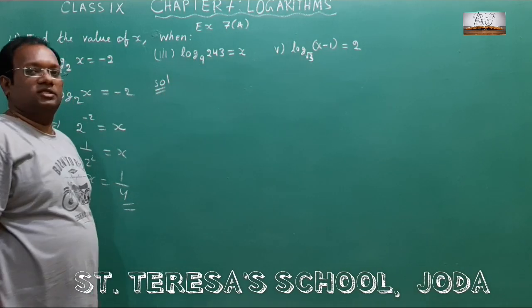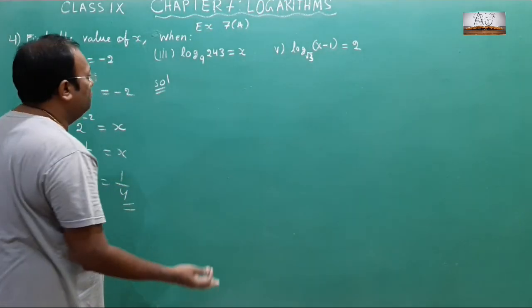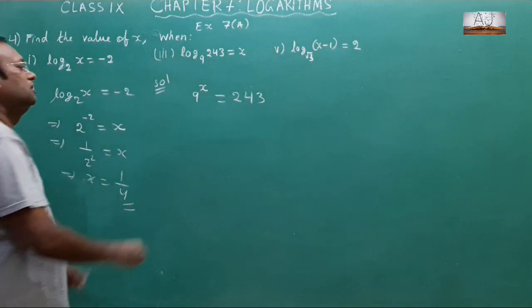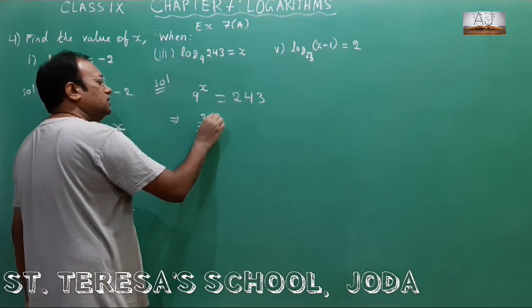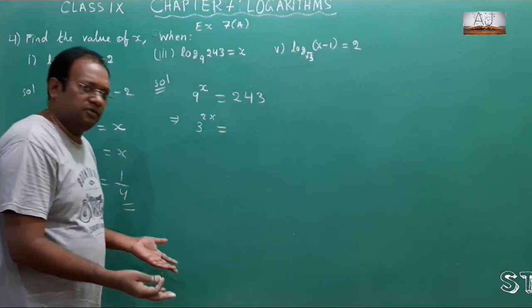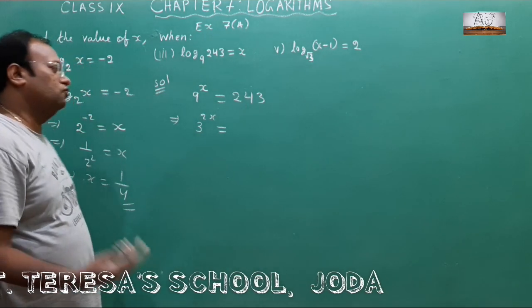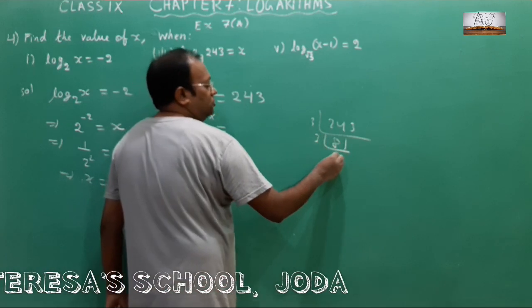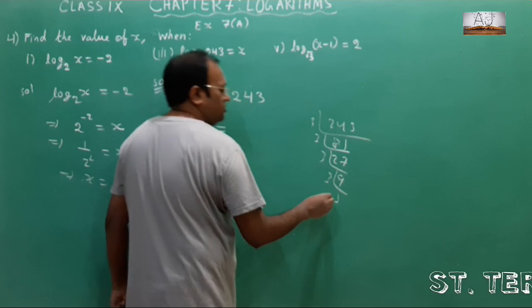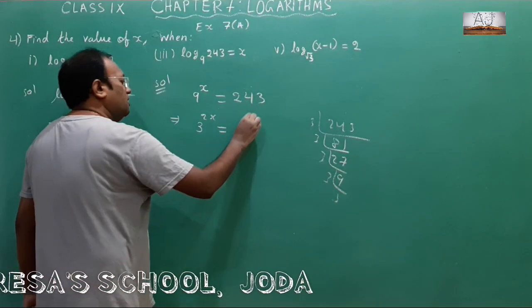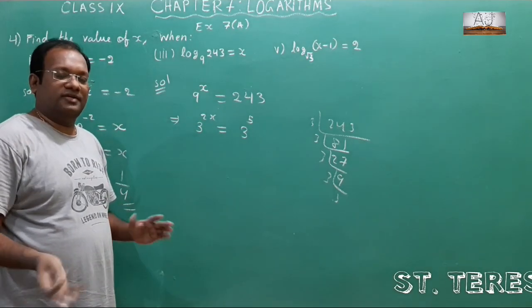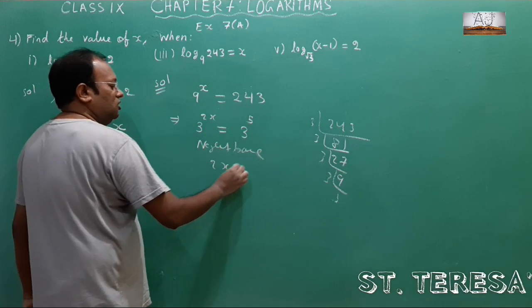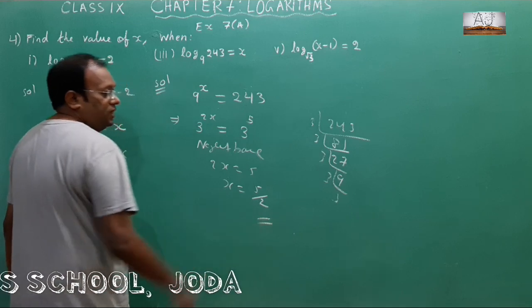Second bit: log 243 with base 9 equals x. Convert to exponential form: 9 to the power x equals 243. Now 9 is 3 squared, so 3 to the power 2x equals 243. The prime factors of 243: 243 equals 3 to the power 5. So 3 to the power 2x equals 3 to the power 5. Neglecting the base, 2x equals 5, so x equals 5 by 2.